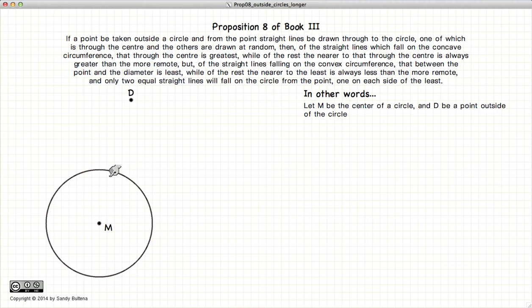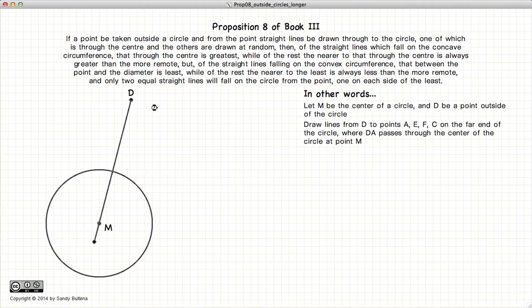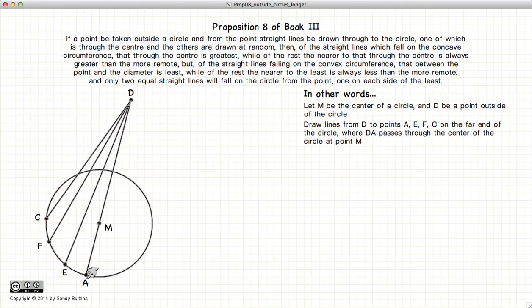This proposition states that if you have a circle, with the center being M, and a point outside the circle, D, if you draw lines through the circle, one through the center of the circle, the line that goes through the center of the circle and reaches the convex part of our circle will be larger than any line drawn through the circle not through the center.